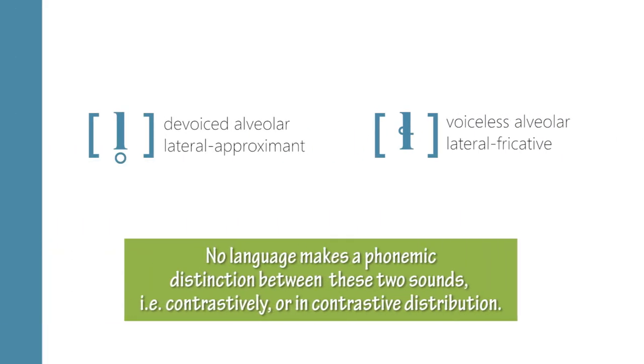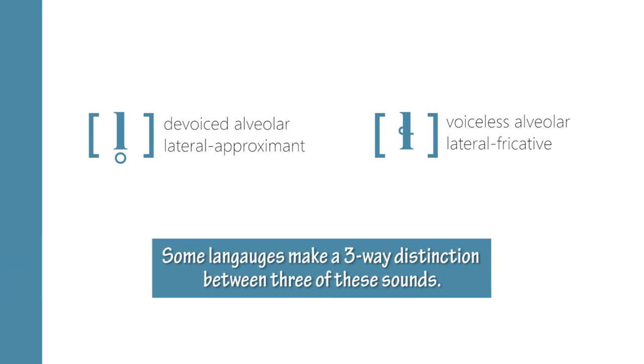No language makes a phonemic distinction between the devoiced /l/ and the voiceless alveolar lateral fricative, and no language uses these two sounds contrastively. This means that no language uses them in contrastive distribution. However, some languages make a three-way distinction between three of these sounds.